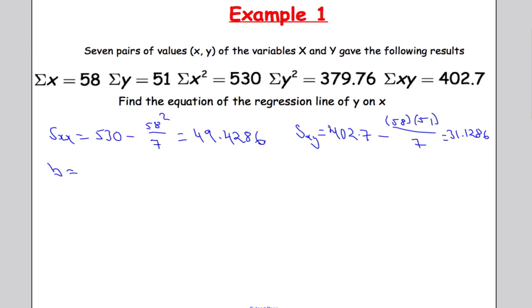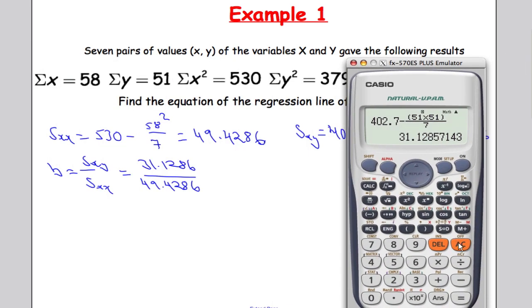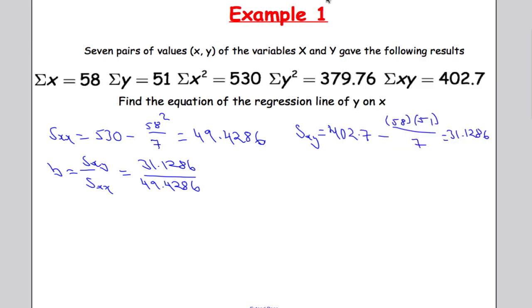B then is given by sxy over sxx. So we're going to do 31.1286 divided by 49.4286 gives us 0.6298. Again sticking with four decimal places here.